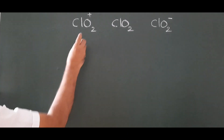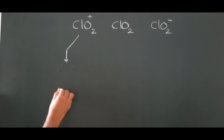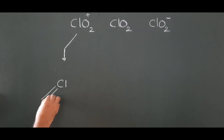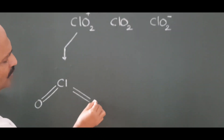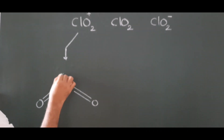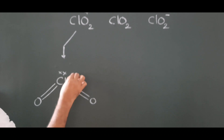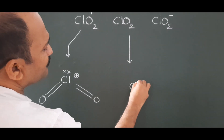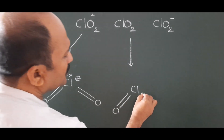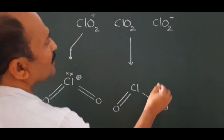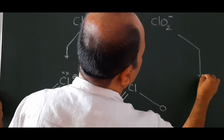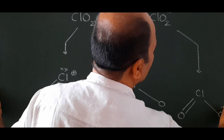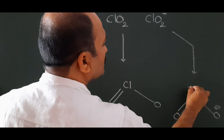I am taking the structures: ClO₂⁺, ClO₂, and ClO₂⁻. In ClO₂⁺, the central atom is chlorine, which carries a positive charge, and it has one double bond O, one double bond O, and one lone pair. In ClO₂, chlorine has a double bond O and a special bond, which I will explain. In ClO₂⁻, chlorine has a double bond O and an oxygen that carries a negative charge, with two lone pairs.